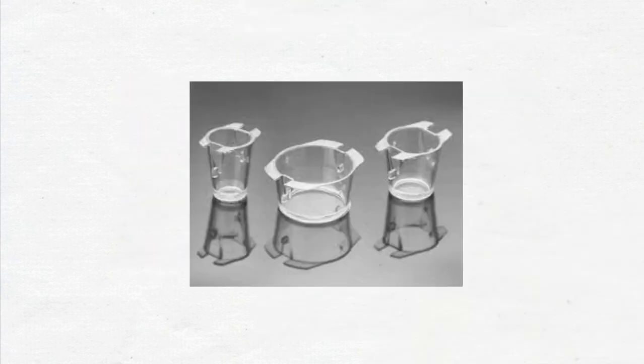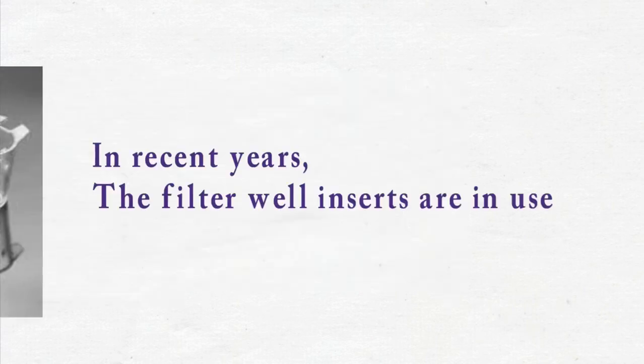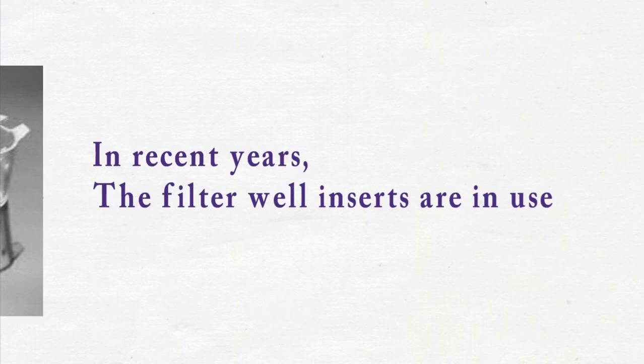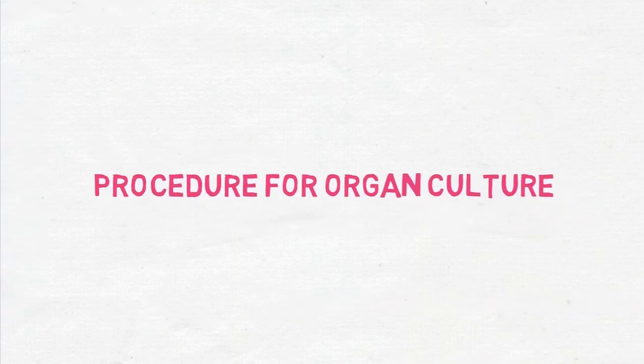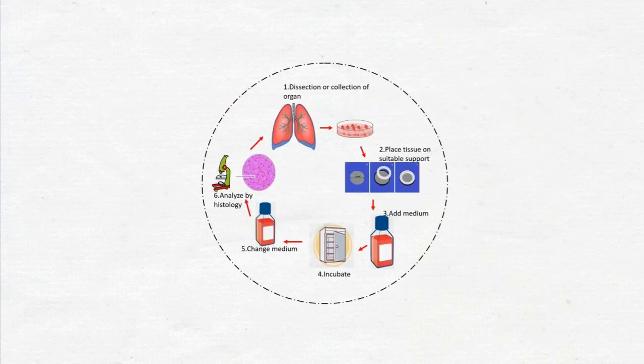In recent years, filter well inserts are in use to attain the natural geometry of tissue more easily. The basic technique of organ culture consists of the following stages. The first one is the dissection and collection of the organ tissue and reducing the size of the tissue as desired, preferably to less than 1 mm in thickness.